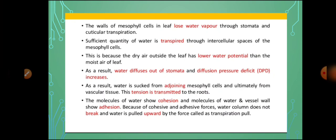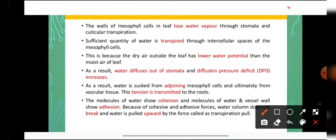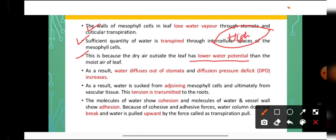How does ascent of sap take place according to this theory? First, the mesophyll cells in the leaves are losing water by the process of transpiration in the form of water vapor. Sufficient water is lost through the intercellular spaces of the mesophyll cells. This happens because the air outside is dry — it has low water potential — while the leaf is highly saturated with water and has high water potential. Water moves from high water potential to low water potential, so water is lost by transpiration. As a result, water diffuses out of the stomata and diffusion pressure deficit increases.